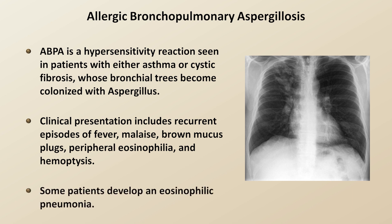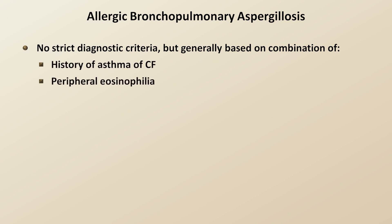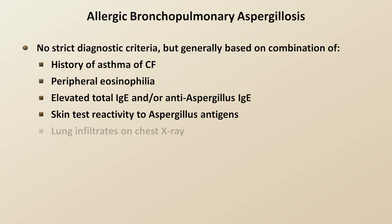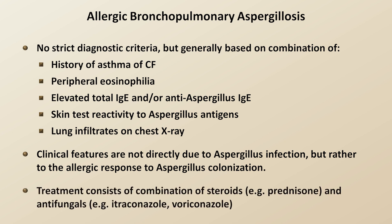Some patients will go on to develop an eosinophilic pneumonia. ABPA has no strict diagnostic criteria that experts can agree on, but rather diagnosis is currently based on some combination of a history of asthma or cystic fibrosis, peripheral eosinophilia, an elevated total IgE and/or elevated anti-Aspergillus IgE antibody titer, skin test reactivity to Aspergillus antigens, and lung infiltrates on chest x-ray. The clinical features are not directly due to Aspergillus infection but rather to the allergic response to Aspergillus colonization. Treatment typically consists of steroids to reduce inflammation and antifungals to reduce the burden of Aspergillus, with both drugs continued for months.